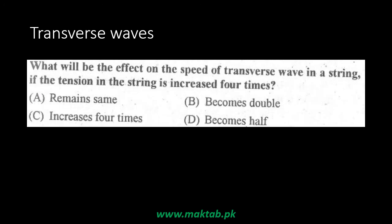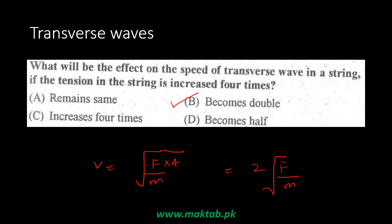What will be the effect on the speed of transverse waves in a string if the tension is increased 4 times? The relationship is v equals the square root of F over m. If I increase tension 4 times and take the square root, the result is 2 times the square root of F over m. So the speed doubles. Speed becomes doubled when tension is increased 4 times.